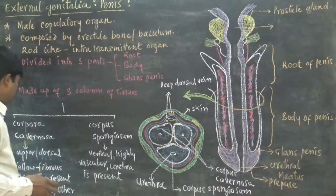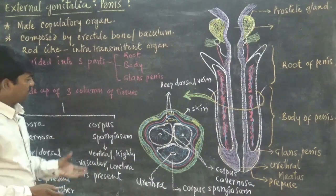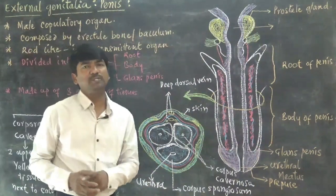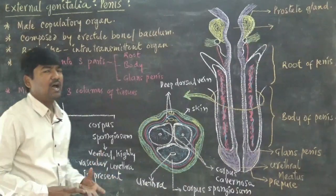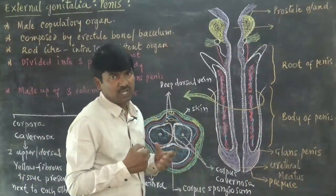The second part is corpus spongiosum. Here, a single column is present that is located in the ventral side, which is highly composed with vascular structures.